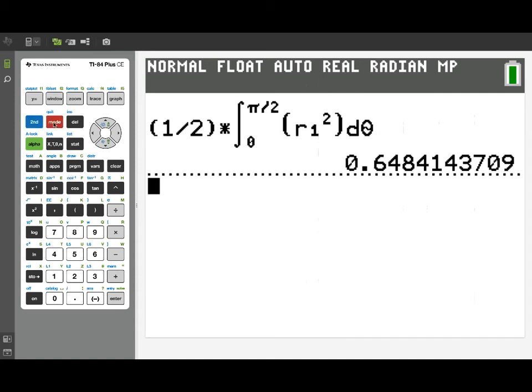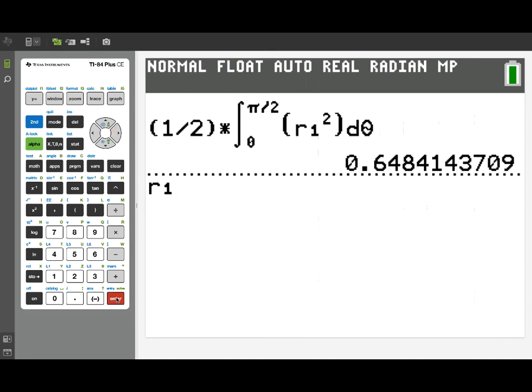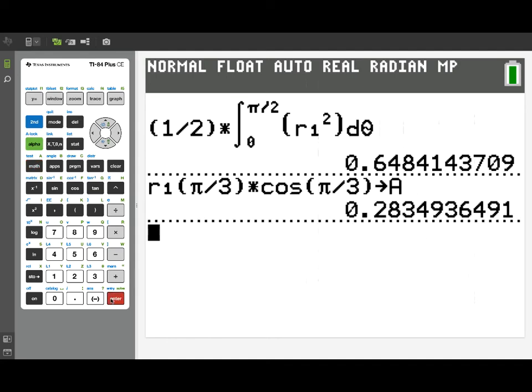Now let's see if we can make use of this. I'm going to return to the calculator screen. And what I'm going to do is calculate that A and B value. Now what that will be is I'll need my R1 evaluated at the theta value for that point, which was pi over 3. So we're taking R1 of pi over 3. We're going to multiply by the cosine of pi over 3. And that should give us the X coordinate of the point of tangency that we're after. So after I've entered cosine of pi over 3 and we hit enter, we find the X coordinate. And we're going to store that in the value A. And let's see what we've got is approximately 0.283.